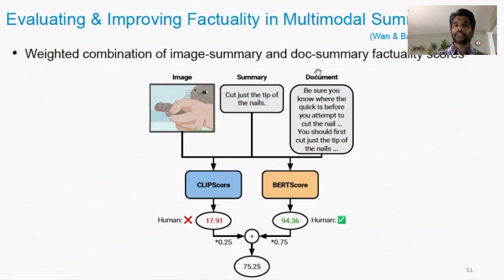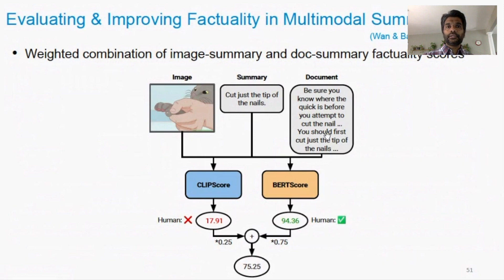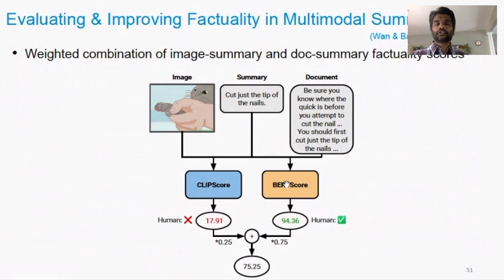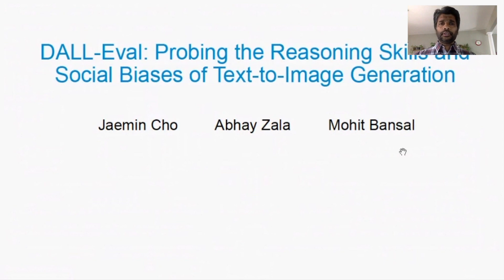Briefly on the two multimodal connections: in our EMNLP 2022 work, we captured factuality as a metric for multimodal summarization, where the model is given both images and a document from a dataset like WikiHow and must generate a summary. We compared language-based similarity metrics versus image-and-text-based metrics like CLIP score versus BERTScore, and learned the best combination to get an overall metric checking both image-summary faithfulness and document-summary faithfulness.